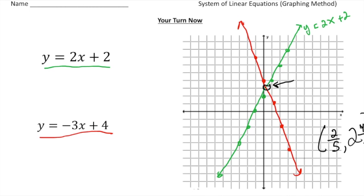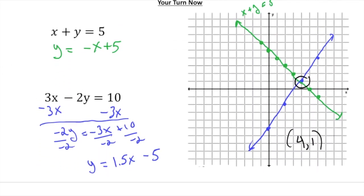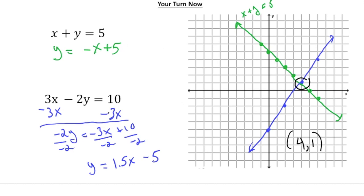Welcome back. The green line is y equals 2x plus 2 — it should have a positive slope going upward. The red line is y equals negative 3x plus 4. The solution is right here where the little circle is, and unfortunately it doesn't land on a nice integer. The solution is x equals 2 fifths and y equals 2 and 4 fifths. For the next problem, x plus y equals 5 is the green line and 3x minus 2y equals 10 is the blue line. They intersect at point (4, 1), so the solution is x equals 4 and y equals 1.